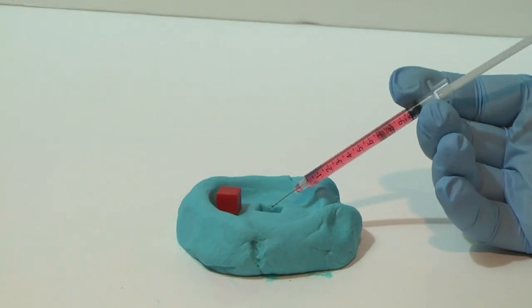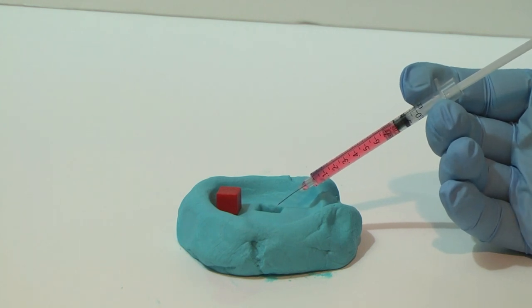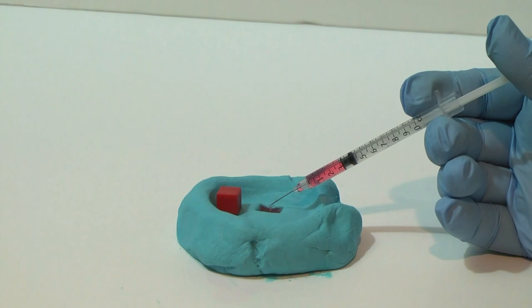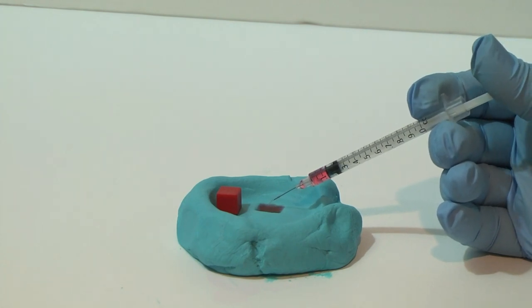Now let's take the one cc of water and place it in the depression that we formed in the Play-Doh. Remember, the depression has a volume of one cubic centimeter. So one cc of a liquid should fill the depression all the way to the top.